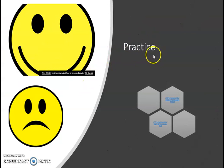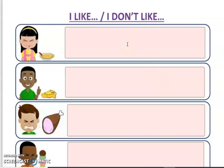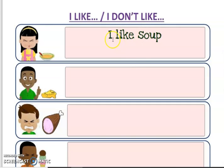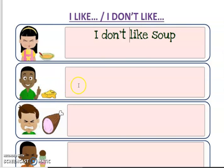Now we're going to do a bit of practice. I will post the links for the worksheet at the end of this video and on WhatsApp. To practice using like and don't like, you need to click on the link on the WhatsApp group. For this one, it's I like or I don't like. I don't like soup. This here is cheese, and the boy likes it, so I like cheese.